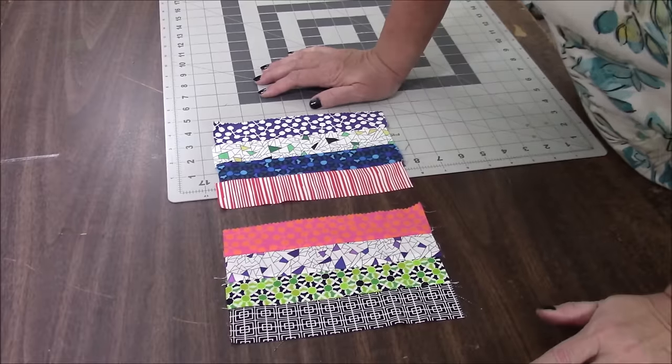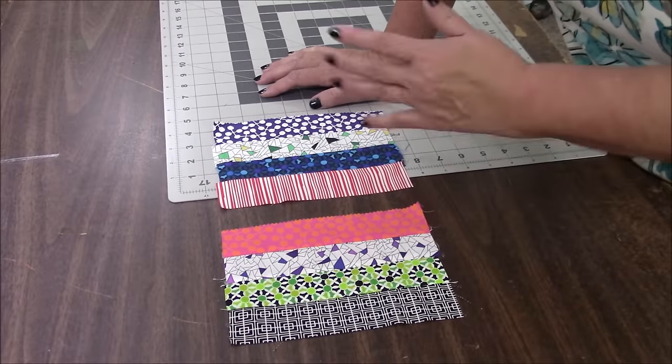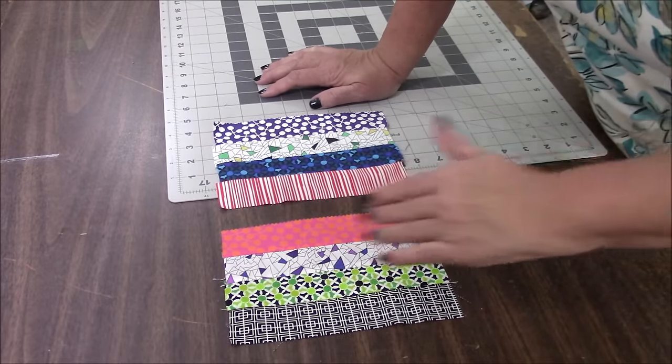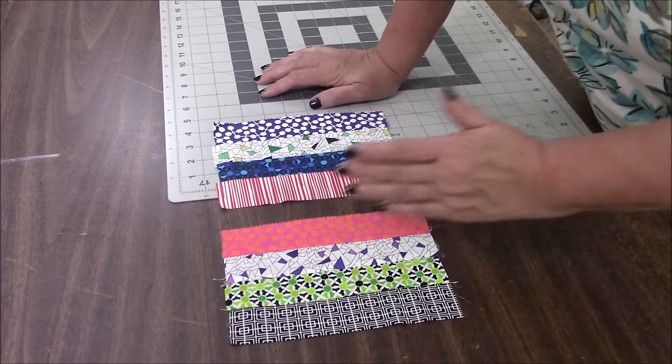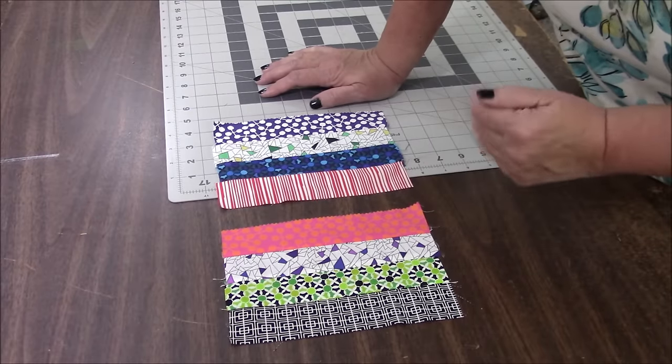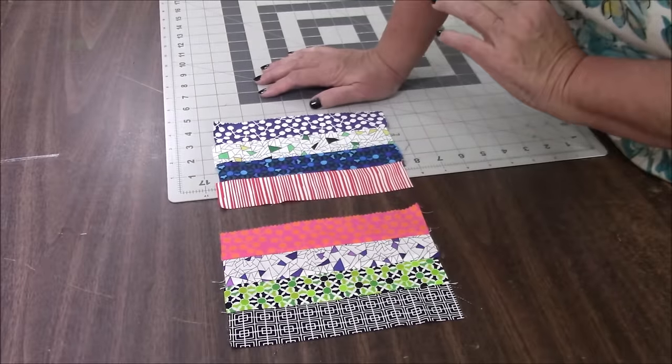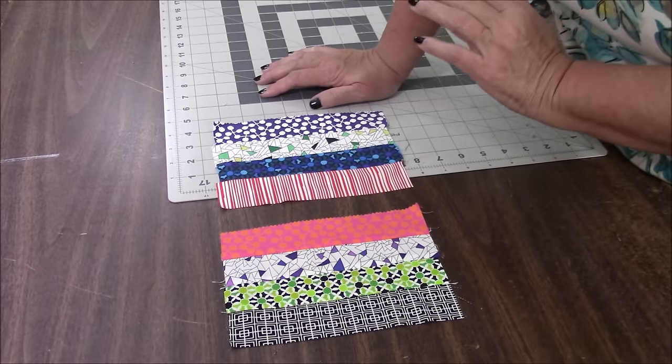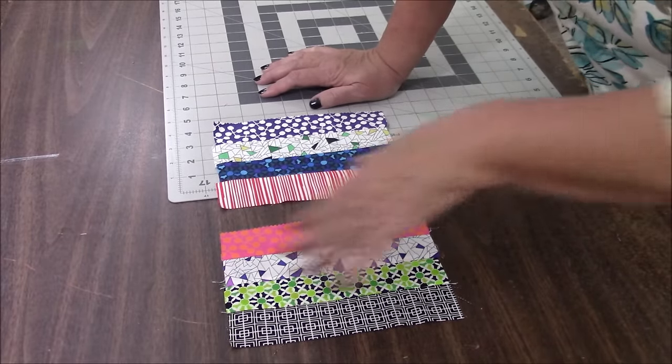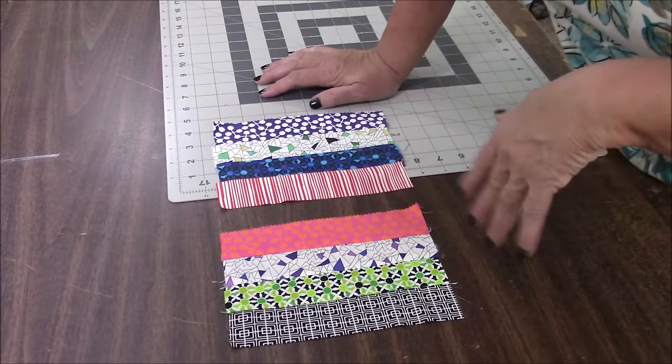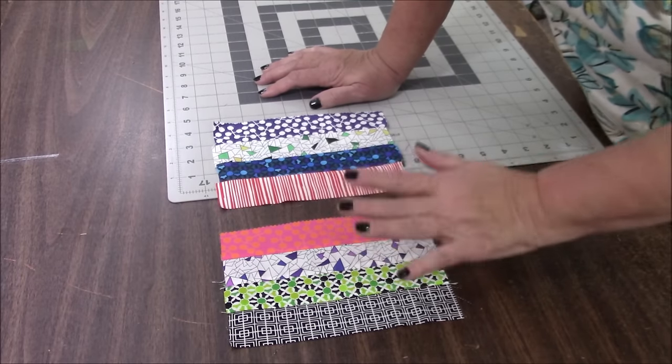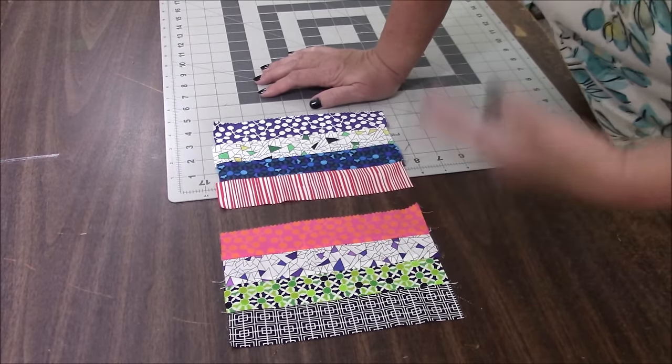But for easy math you could say two, four, six, eight. I need at least eight inches this way so that you could trim your block. So now let's do it with like three inch strips. Three, six, nine, twelve. I have a light that's going wild. You would need at least twelve inches this way. So you just want to make sure that you have enough fabric in both directions to cut your block.